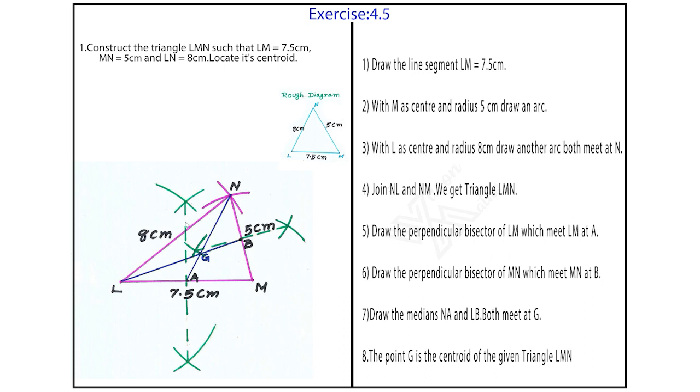Then fifth step, perpendicular bisector of side LM. Sixth step, perpendicular bisector of side NM. Then seventh step, the medians joining NA and LB. The eighth, the point G is the centroid of the given triangle LMN. This is the eight mark question.